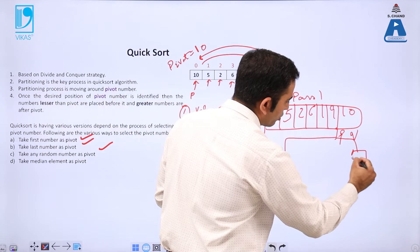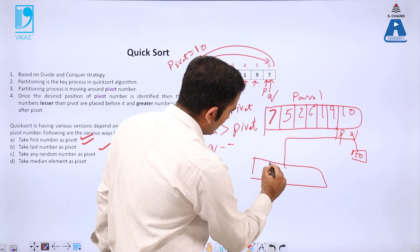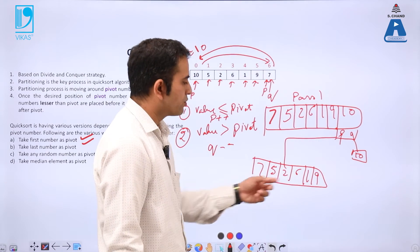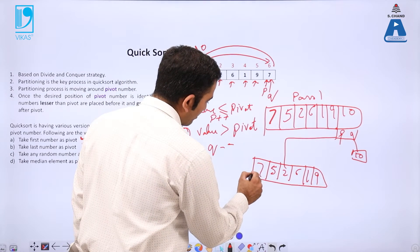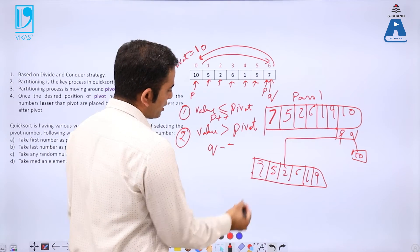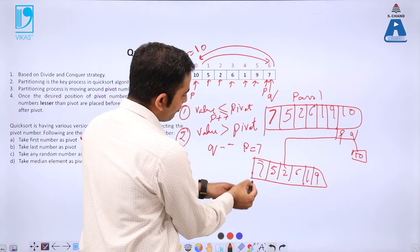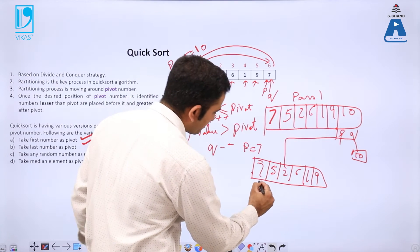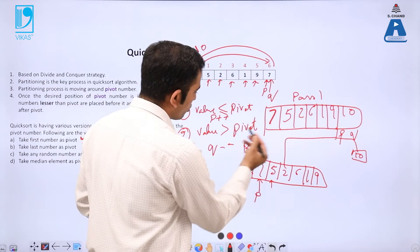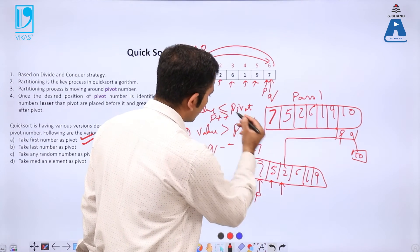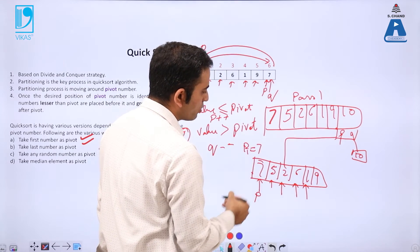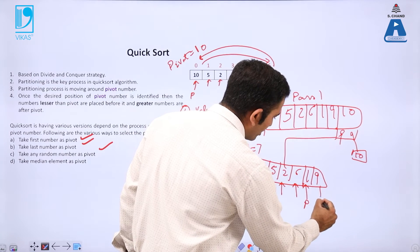In Pass 2, on the sub-array 7, 5, 2, 6, 1, 9 we select a new pivot — let's take 7 as the pivot. Applying the same rule: 7 is equal to pivot so p moves forward; 5, 6, 1 are all less than or equal to 7 so p keeps moving. Then 9 is not less than or equal to 7, so p stops there.